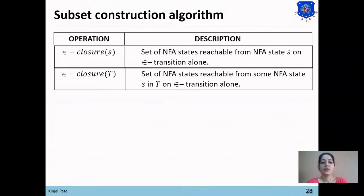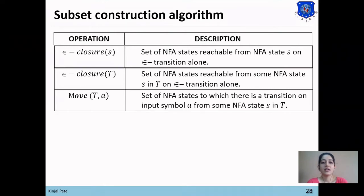Next is the null closure of capital T. Capital T is a set which can have more than one state. It finds the number of states reachable from S in T where S can have more than one state. The next operation is move(T, a): we find the 'a' transition from set T, which has more than one state — the set of states reachable on input symbol 'a' from some NFA state S in T.